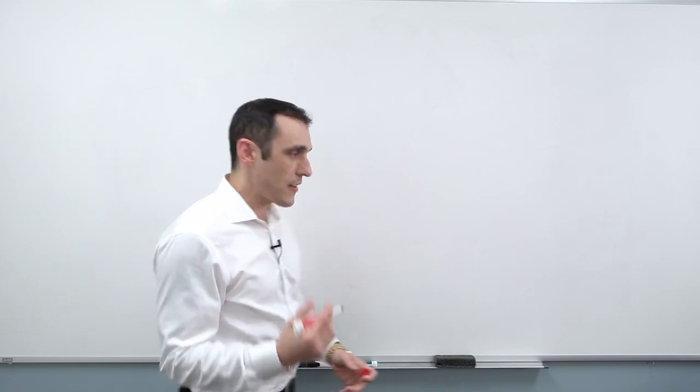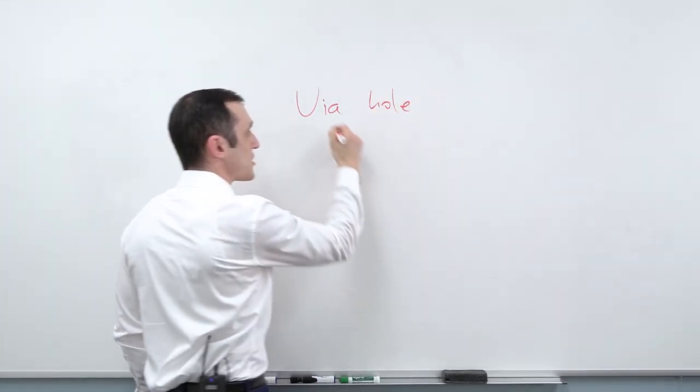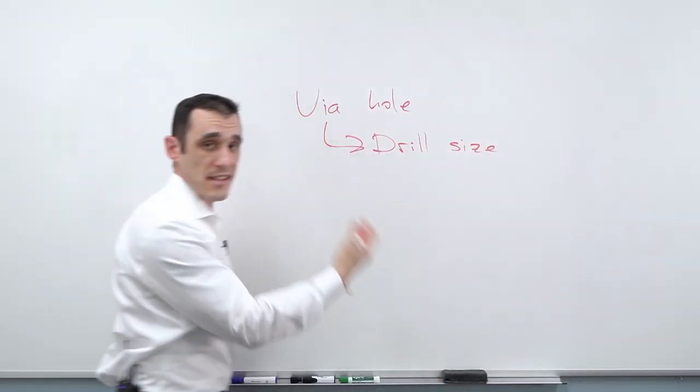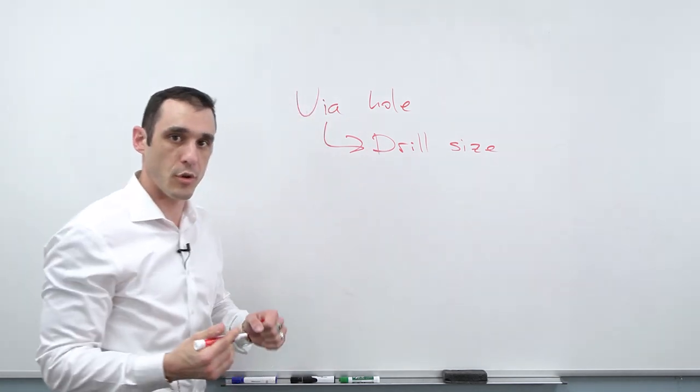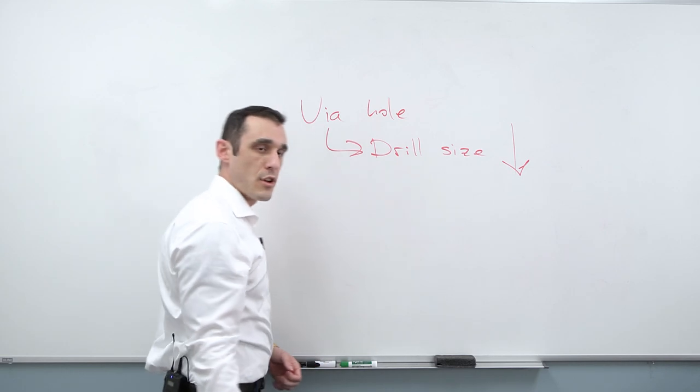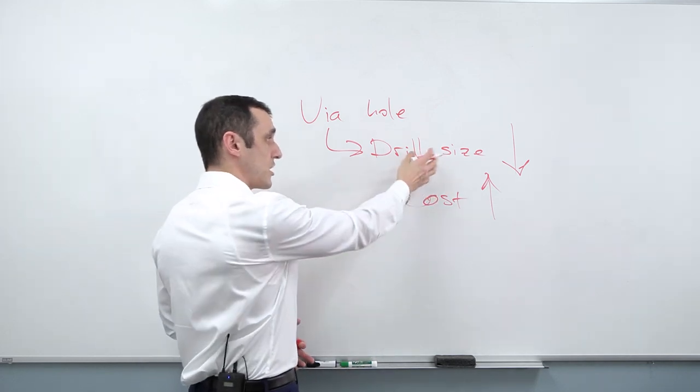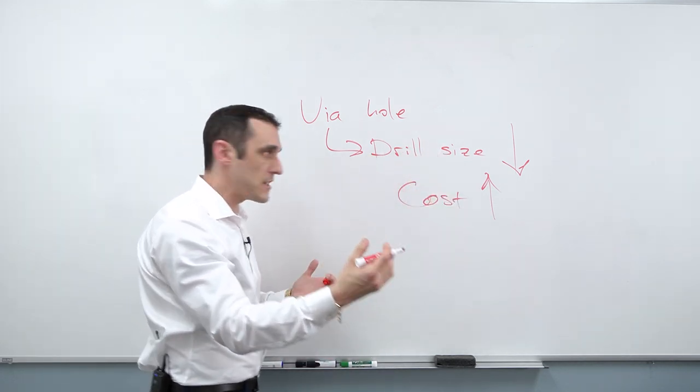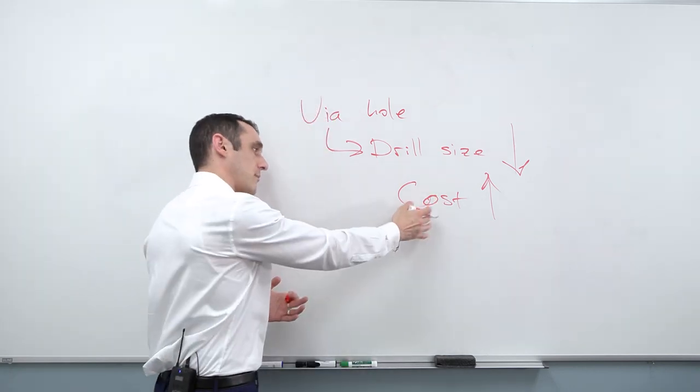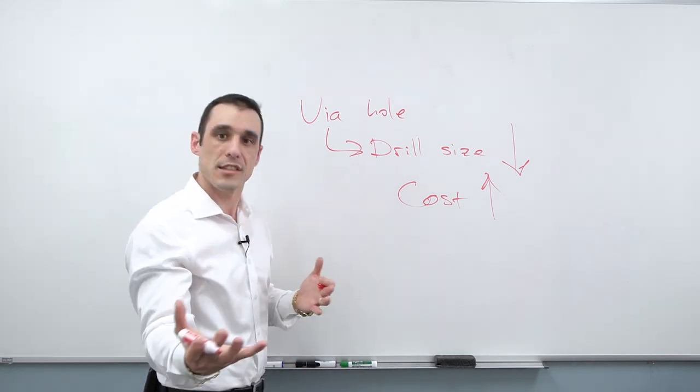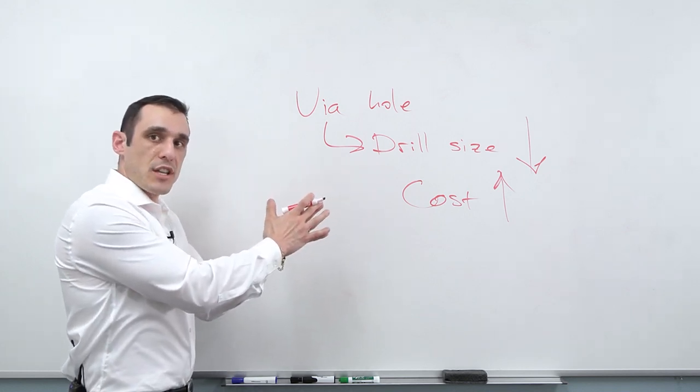If you remember our earlier video on PCB manufacturing, one thing that we talked about was the via hole size and specifically the drill size, meaning the size of the hole that they have to drill, which will then be plated up with copper to form your finished drill hole. As this drill size goes down, what happens to your cost? Well, your cost generally goes up and that's because when you get to a smaller drill bit, those bits fracture more often. Obviously that means the costs go up because they pass that cost on to you, the customer. One thing that you can do is you can pick a minimum drill size that you want to use.